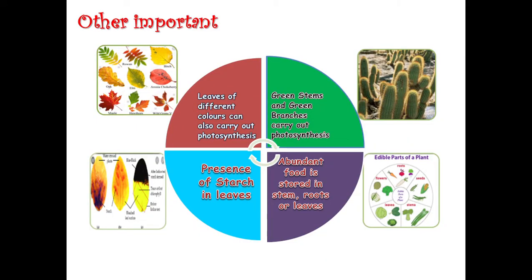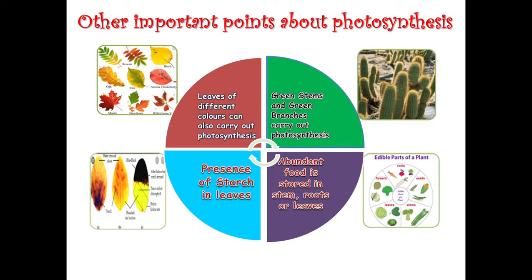Not only green leaves — leaves of other colors also carry out photosynthesis. You can verify this using iodine solution: if you pour iodine solution on a leaf that has carried out photosynthesis, it will turn blue-black in color, confirming the presence of starch.